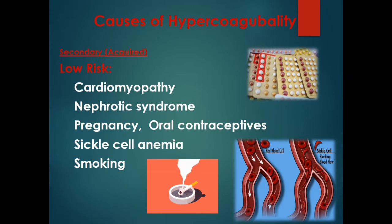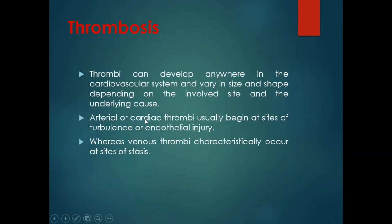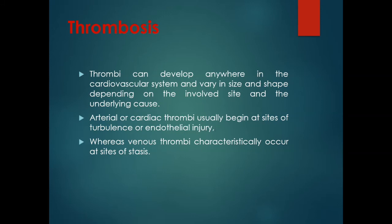Thrombosis can develop anywhere in the circulatory system and varies in size and shape depending on the site involved and the underlying cause. Arterial or cardiac thrombosis usually begins at the site of turbulence or endothelial injury, such as atherosclerotic ulcerative plaques. Venous thrombi characteristically occur at sites of stasis; when blood is stagnant at any site in the venous system, it can lead to the formation of venous thrombi.